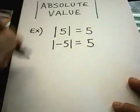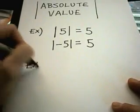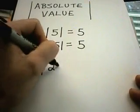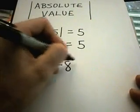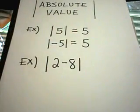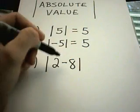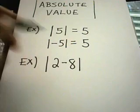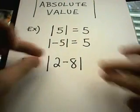So let's do a couple examples here. Suppose I have 2 minus 8, in absolute value. You can't just break up the absolute value and somehow make this positive 2 plus positive 8. That's not the idea.